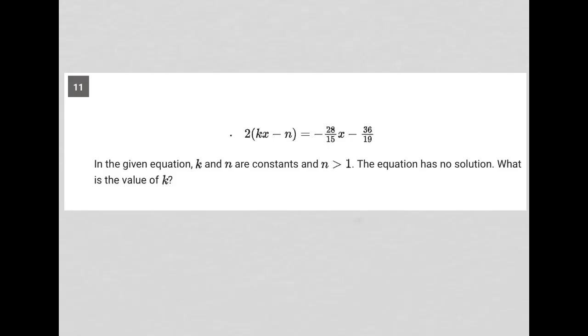This question starts off with this equation here. It says 2 times kx minus n is equal to negative 28/15 x minus 36/19.